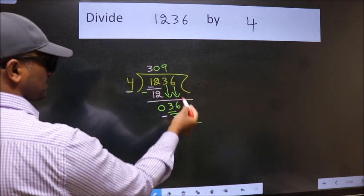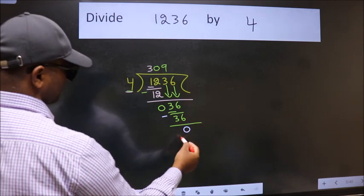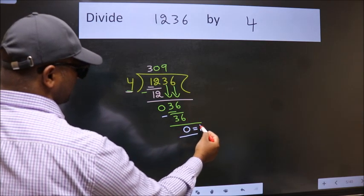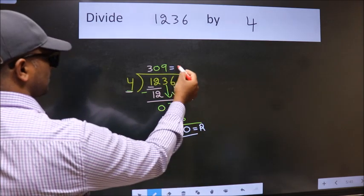No more numbers to bring it down. So, we stop here. This is our remainder and this is our quotient.